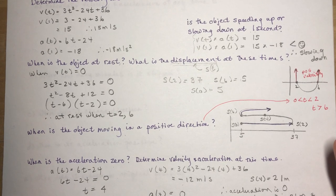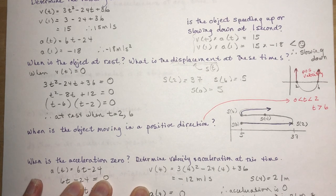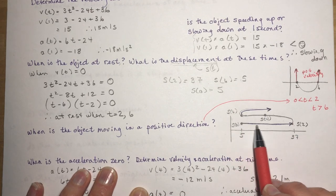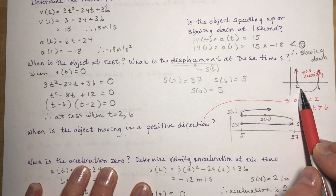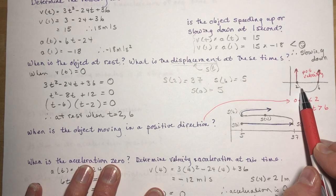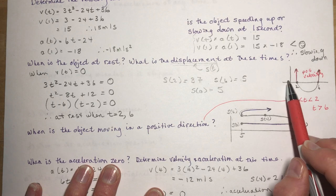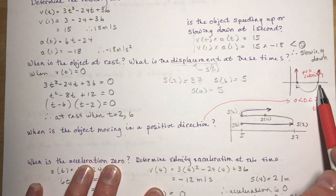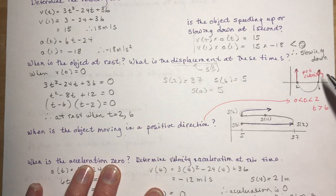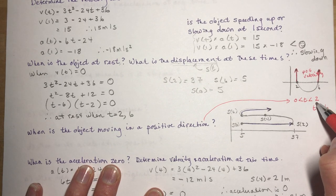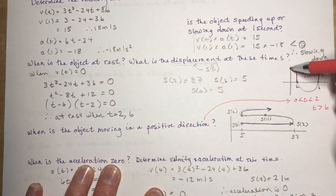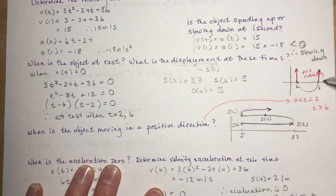3.1, continuing the motion of an object along a straight path. We're back — I was speaking about this and just finished drawing this graph in the last lesson. When is the object moving in a positive direction? You can tell that from the velocity function. When velocity is positive, it's moving in a positive direction. Sketching the velocity function with zeros at t=2 and t=6, it's a concave-up quadratic, so velocity is positive between 0 and 2 seconds and after 6 seconds.